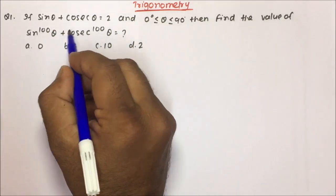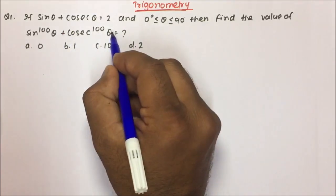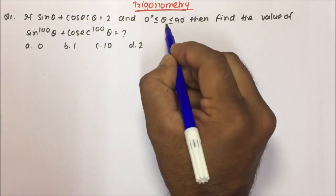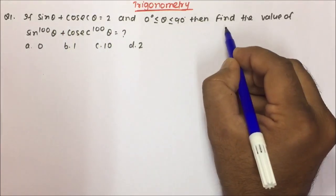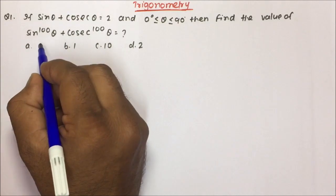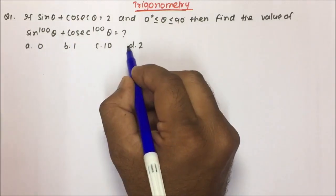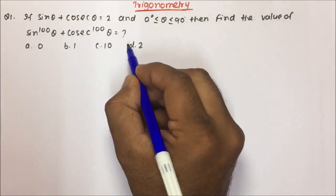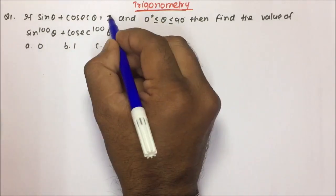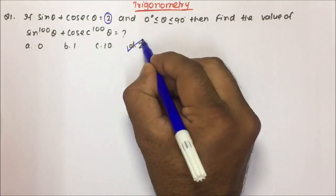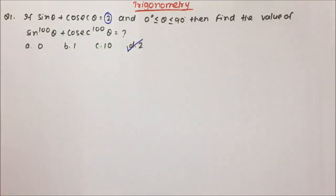If sin θ + cos θ = 2 and θ is between 0 to 90 degrees, then you have to find the value of sin¹⁰⁰θ + cos¹⁰⁰θ. The answer will be 2, and option D is the correct answer for this particular question.